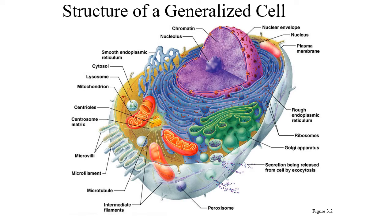When we look at a general cell, we have all of the structures that can be found within a human body cell. We see obvious things like the nucleus — the large structure in the center — which is generally the only thing visible under the microscope. We also have the endoplasmic reticulum (rough and smooth), Golgi apparatus, mitochondria, lysosomes, and some cells have microvilli to increase surface area.